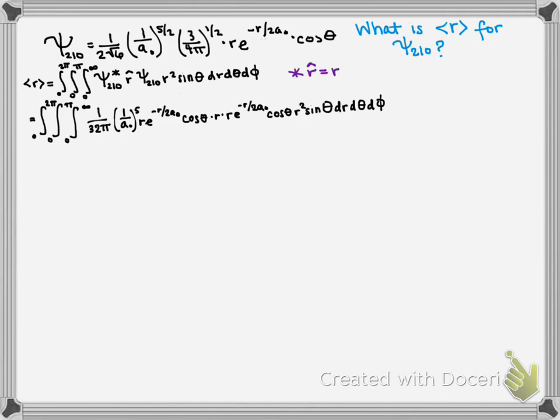So let's pull all our constants out front and start combining like terms. So we can pull out 1 over 32π and 1 over a₀ to the fifth, write our integral. We can combine our r's. Notice that we have r times r times r times r², or r to the fifth. And then we have our exponential, e to the minus r over a₀. And then we can combine our cosines and get cosine² θ, sin θ, and then what remains of our integrand is dr, dθ, dφ.